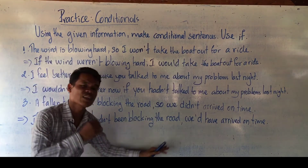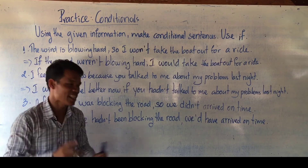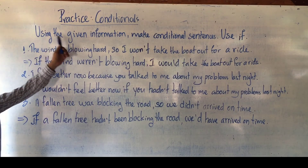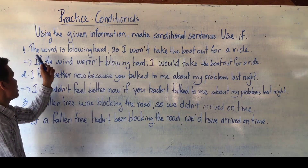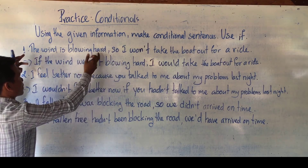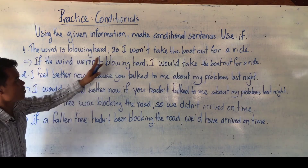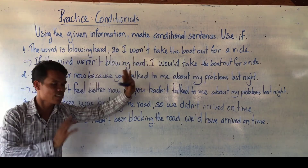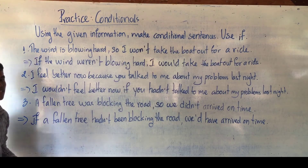Everything is contrary to fact — an impossible situation in the past. This practice refers to using the given information to make a conditional sentence using 'if.' You read the given information: the cause goes in the if-clause, and the result goes in the main clause. Everything is contrary to fact — impossible, improbable, something only imaginary.